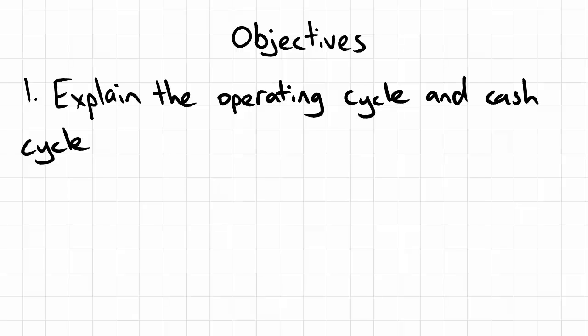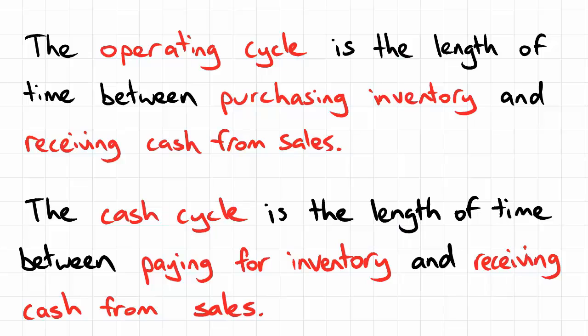In this video, we'll introduce the operating cycle and the cash cycle, which are a couple of measures of short-term financial performance. The operating cycle is the amount of time between purchasing inventory and receiving cash from the sale of that inventory. The cash cycle is the length of time between paying for inventory and receiving cash from the sale of that inventory.